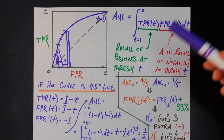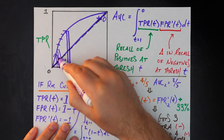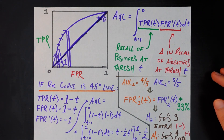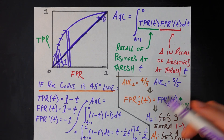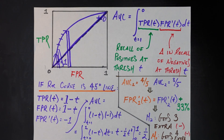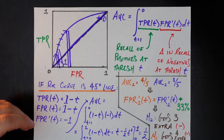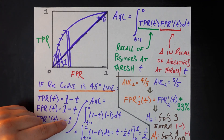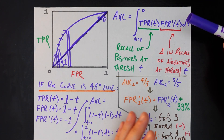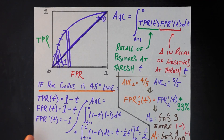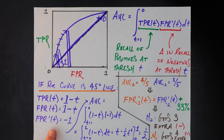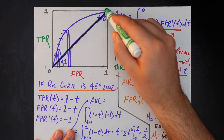Writing the AUC in this form also has cool consequences. For example, if the ROC curve is a 45-degree line — which we say represents a random classifier — this helps us prove algebraically why that gives an AUC of 0.5, since that's just half the area of the box. If we have that 45-degree ROC curve, then the true positive rate and false positive rate as functions of t are both equal to 1 − t. That means the derivative of the false positive rate with respect to t is simply −1. Plugging that into our integral form of AUC and working out the calculus, we actually get 0.5 — algebraically showing the same story as the graphical 45-degree line.